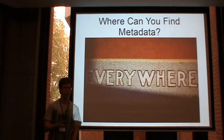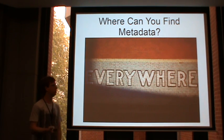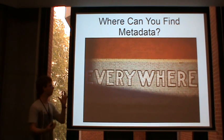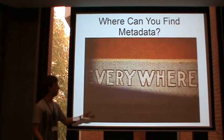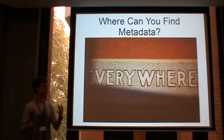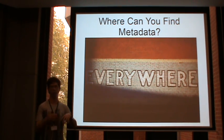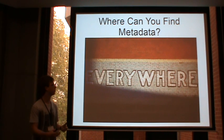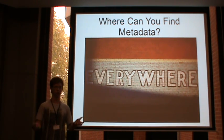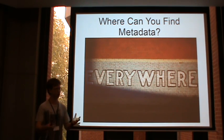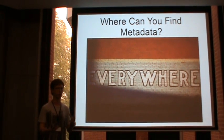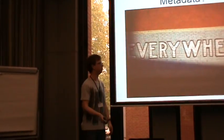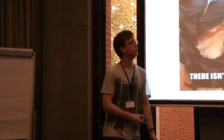So where can you find metadata? You can find it pretty much everywhere. Libraries use it to actually organize their books in databases. Databases use it to organize entries within them. There's metadata in books such as the author, the title, where it was published, the year it was published. Because it's such an abstract concept, there are many different types of data that metadata can apply to.